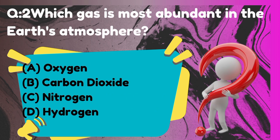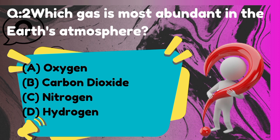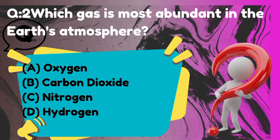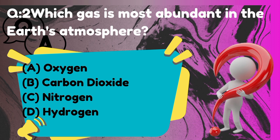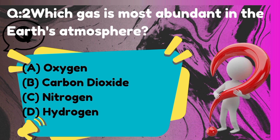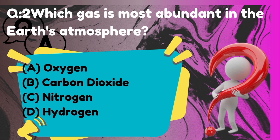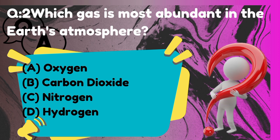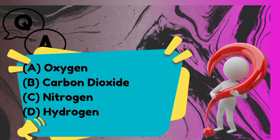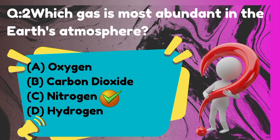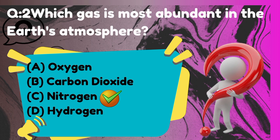Which gas is most abundant in the Earth's atmosphere? The correct answer is option C: Nitrogen.